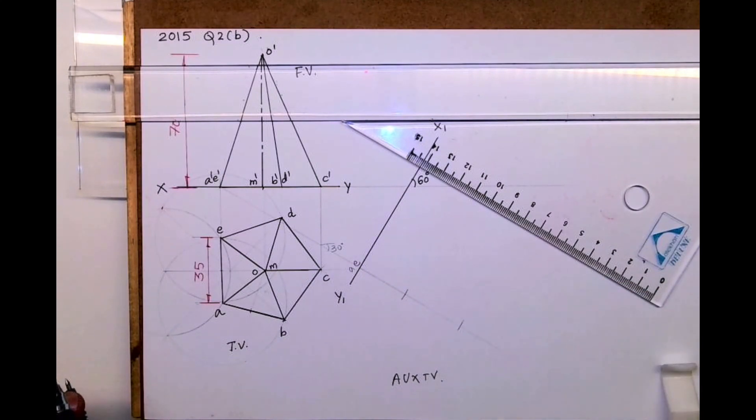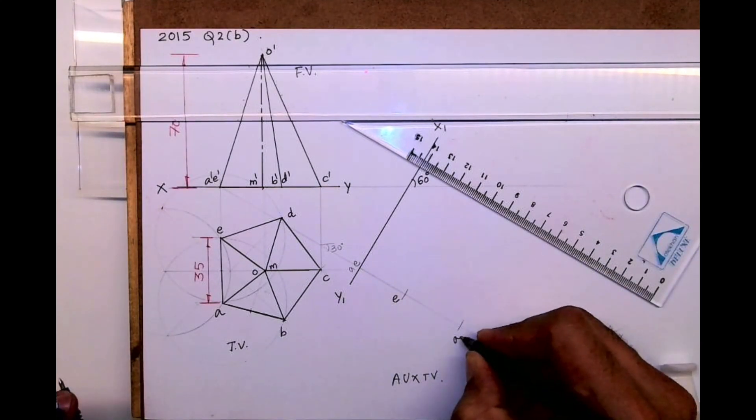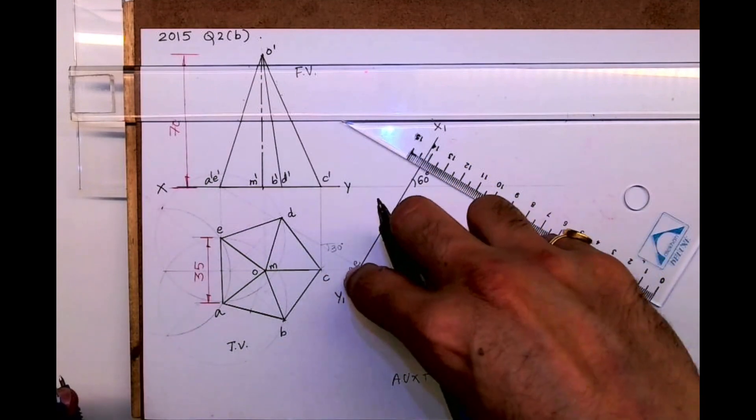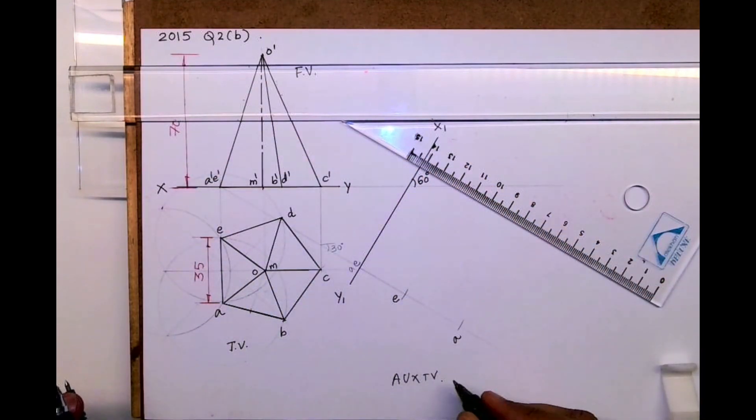So this is A and E. If you see what I am doing, I am transferring width. This you should remember: when you're drawing auxiliary top view, you are transferring width.